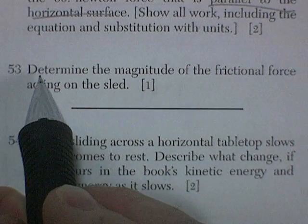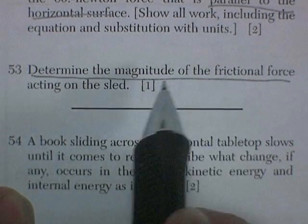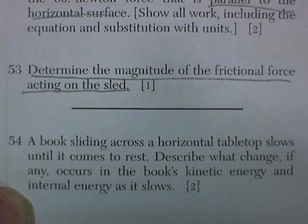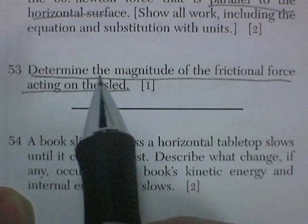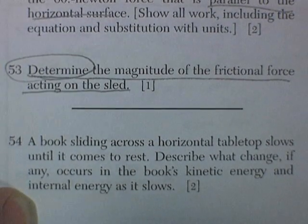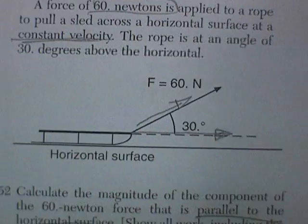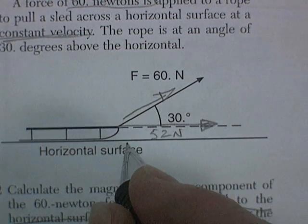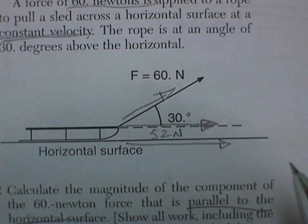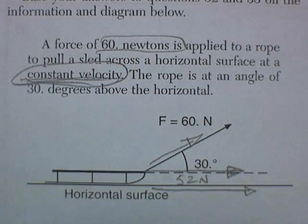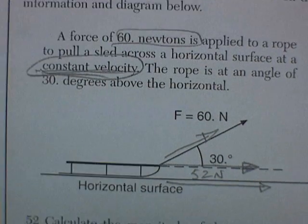Question 53: Determine the magnitude of the frictional force acting on the sled. This is a little tricky, it's determining rather than calculating, so this is a thought process. We've got about 52 newtons trying to make it move, but we're told it's traveling at constant velocity.